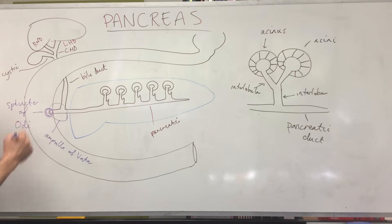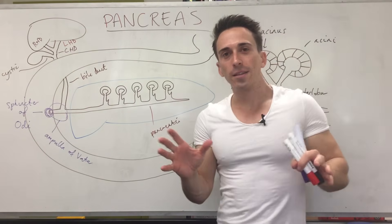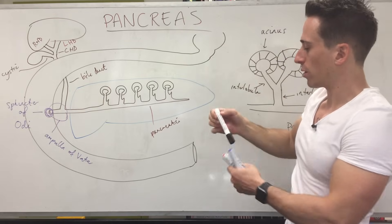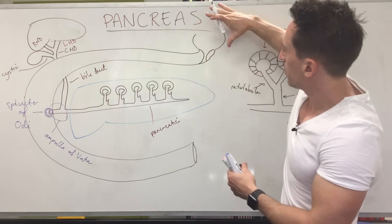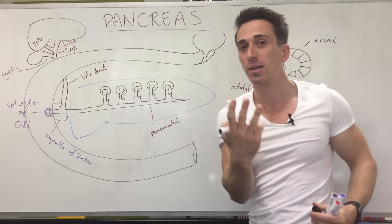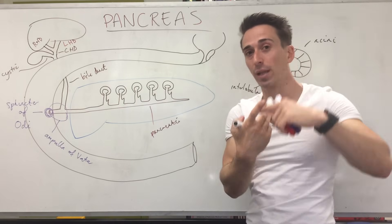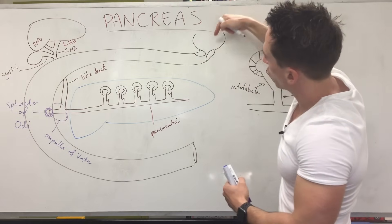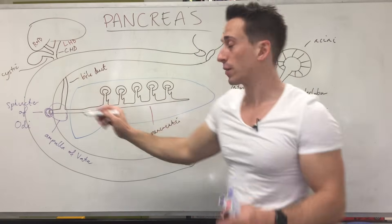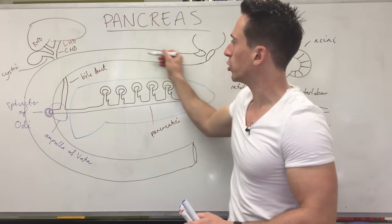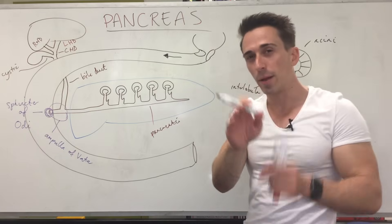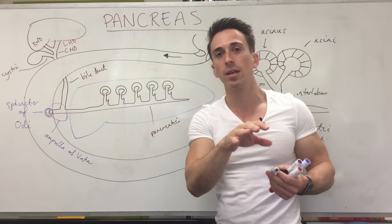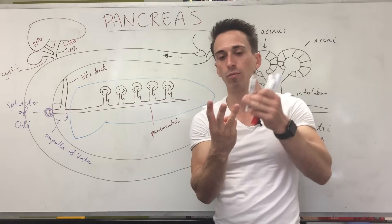Now we've set the scene. When the stomach squeezes its contents — chyme — through the pyloric sphincter into the duodenum, the stomach has three muscular layers: longitudinal, circular, and oblique, which push chyme through. So now we've got foodstuffs — proteins, fats, and carbohydrates — moving through the duodenum.